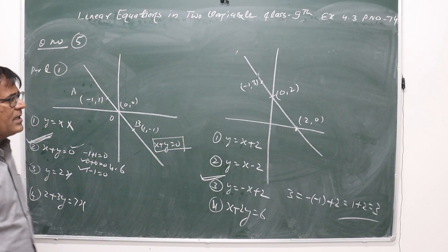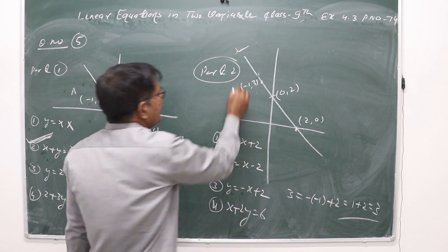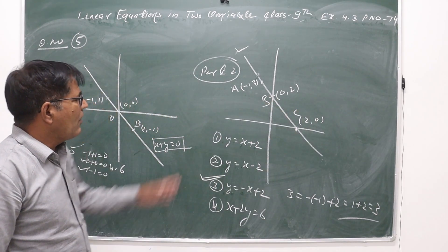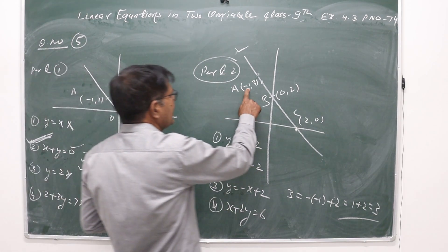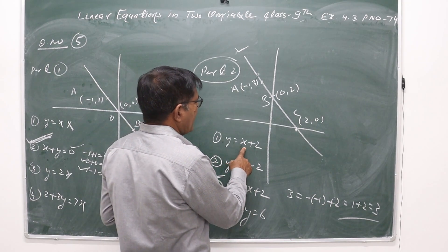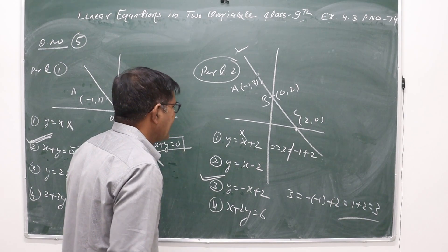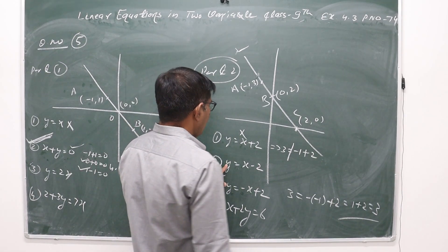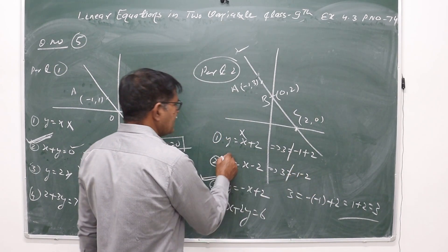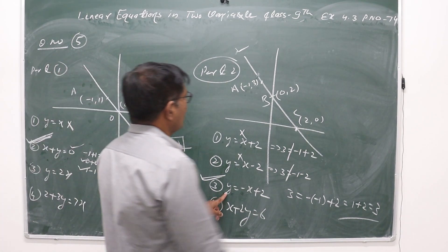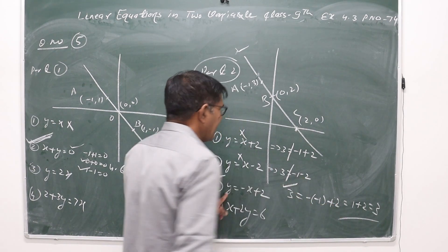Similarly in part 2, again we have a graphical representation. Let the points be A, B, and C. Out of the four options we have to test which particular line is satisfied by the given points. If we put x = -1 and y = 3: checking option one gives 3 = -1 + 2, which is not satisfied — not the correct option. Checking option two: 3 = -1 - 2, which is also not satisfied. Checking option three: putting y = 3 and x = -1 gives -1 + 2 = 1 + 2 = 3, which is satisfied.